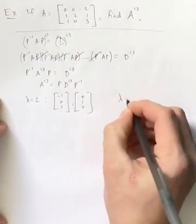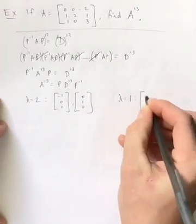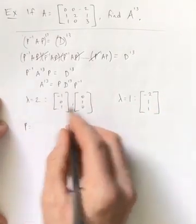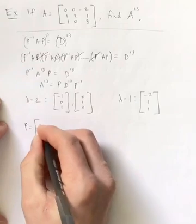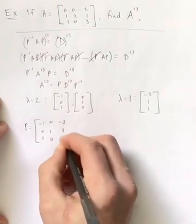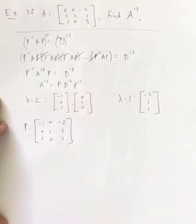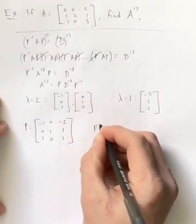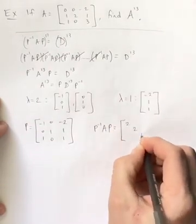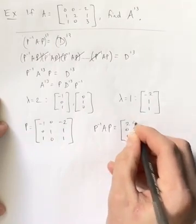Lambda equals 1 gave us this basis vector. And so we formed P simply by putting those columns in that order.